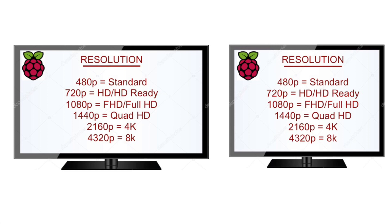Next we talk about resolutions. We've all heard resolutions — what's the resolution of your TV? We remember 480, 720, 1080, and not really 1440, but you recognize all these resolutions. The 'p' is for progressive and 'i' is for interlaced, which is how the pixels are painted onto the screen. You have 720 HD, 1080 full HD, 1440 quad, and then you get into 4K which is actually 2160p and 4320p.